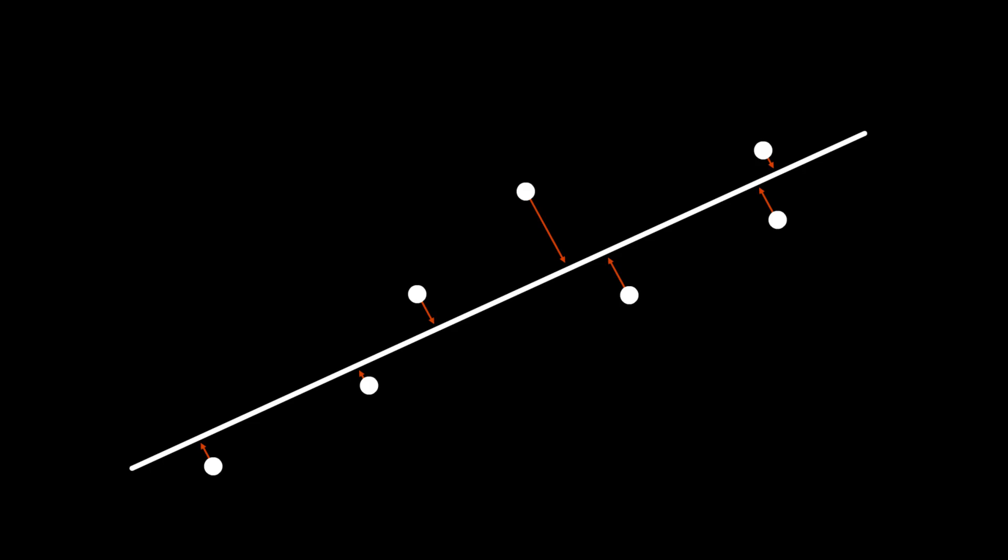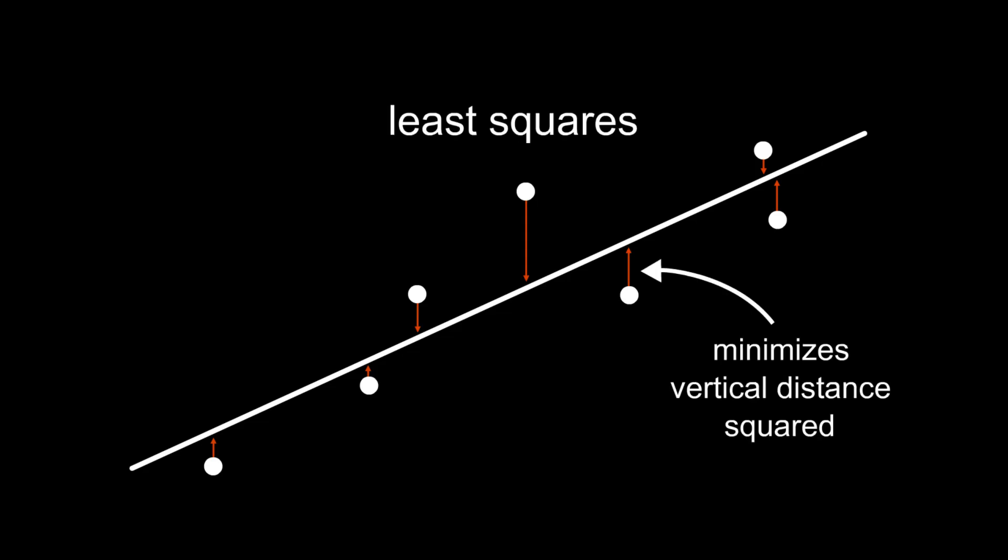Many spreadsheet programs and scientific calculators have functions that mathematically calculate trend lines which minimize the vertical distance to the data points. One of the most common methods is the least squares method which minimizes the sum of the squares of the vertical distances.